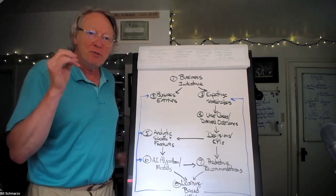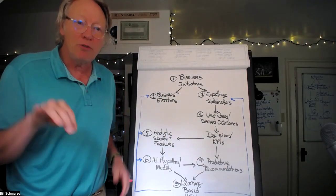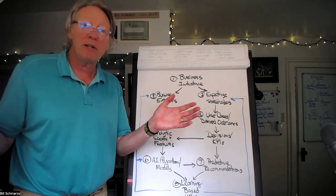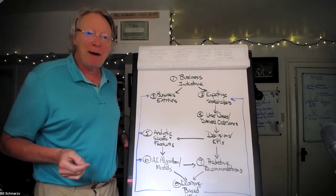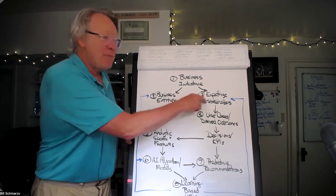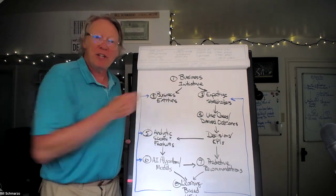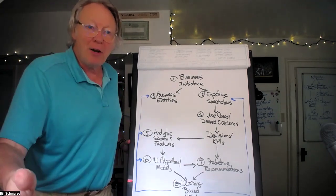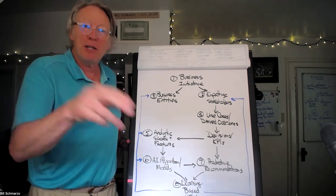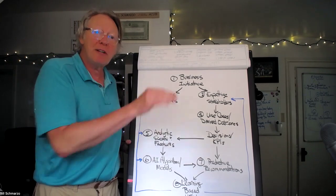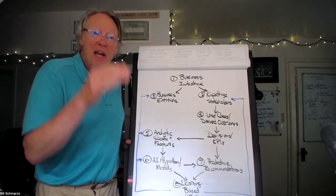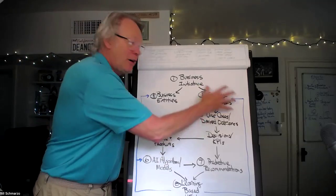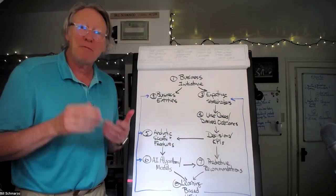Step two in the process is to start empathizing with your stakeholders, those people and functions, both internal and external to the organization who are impacted by that business initiative. From them, we understand why is this initiative important to them? What's in it for them? What are their desired outcomes? What are their potential impediments? What are the KPIs and metrics against which they're going to measure their desired outcomes? And what are the key decisions they need to make to support that? So we're starting to build out a robust set of understanding from the stakeholders.